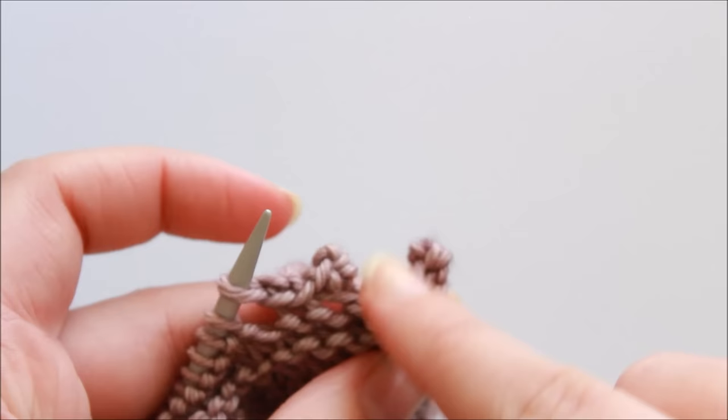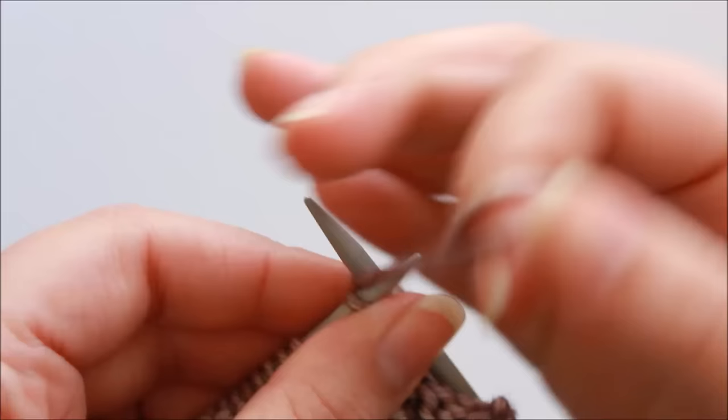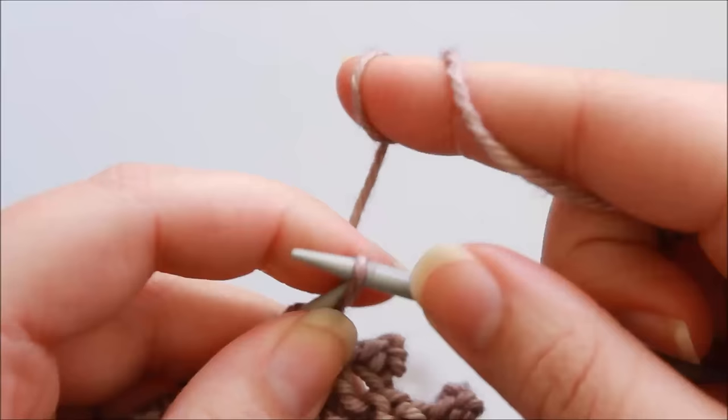So we just keep continuing to repeat those steps. You cast on two stitches, one, two, and bind off four stitches.